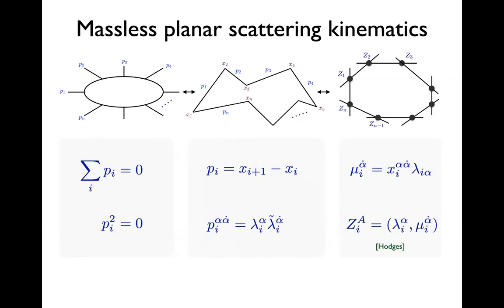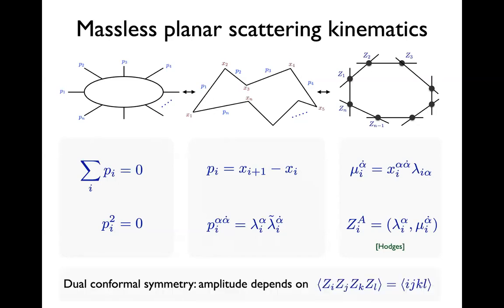There's a new symmetry in planar N=4 called dual conformal symmetry, which acts linearly on the Z's by 4×4 matrices. The natural invariants are therefore the minors — the determinants you get when you put four Z's together and take the determinant of that 4×4 matrix — invariant under SL(4). I'll denote these by four-brackets ⟨IJKL⟩. I'll call these minors, or Plücker coordinates, or four-brackets — all of those mean the same thing.